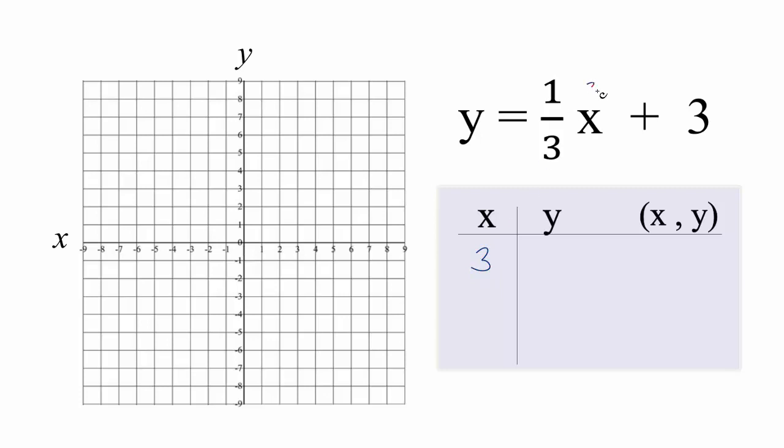So let's put some values in for x. Let's start out with 3 because if we put 3 in for x, 1/3 times 3 that's just 1, 1 plus 3 that'll give us 4. 0 is always a good number to try, 0 times x that's just 0, so 0 plus 3 that gives us 3. And how about negative 3, because if we had negative 3x, 1/3 times negative 3 that's negative 1, negative 1 plus 3 that'll give us 2.